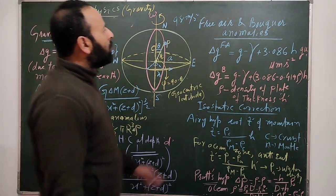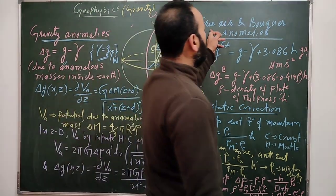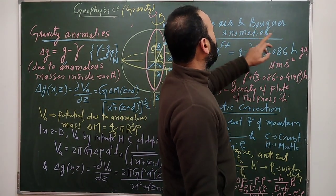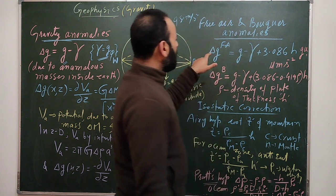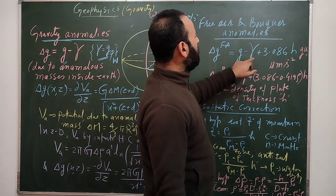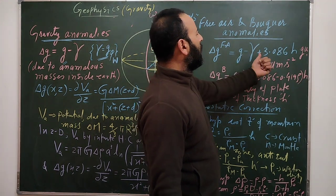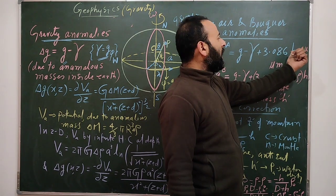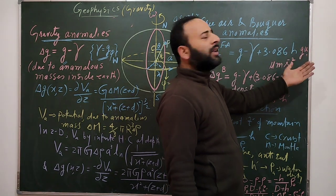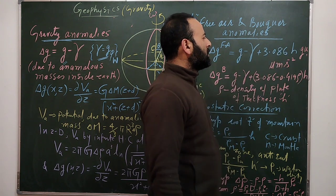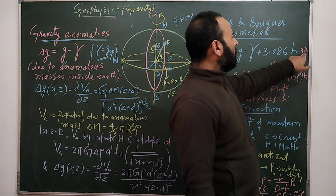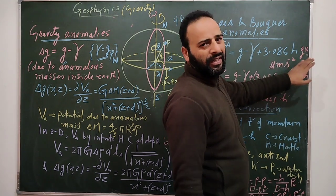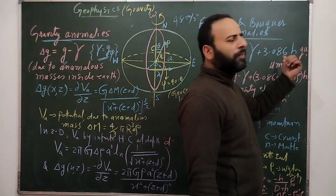When we observe anomalies in g, corrections are needed. The free air anomaly is: g minus gamma, plus 3.086·h, where h is the height from the datum (taken as Earth's surface). This is measured in gravitational units — micrometers per second squared — because the corrections are very small.